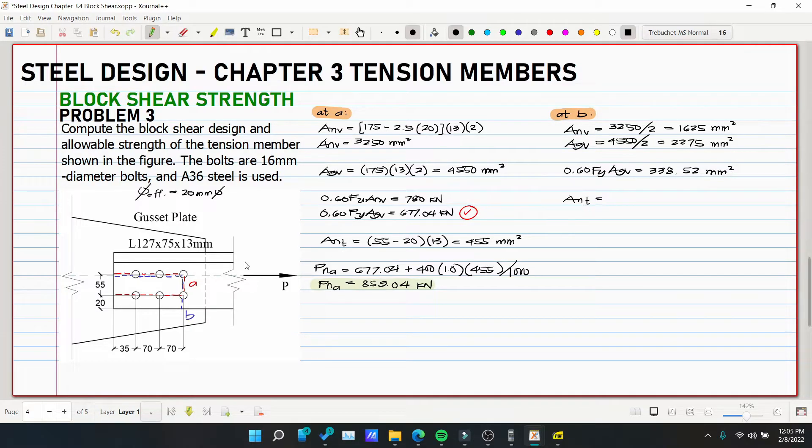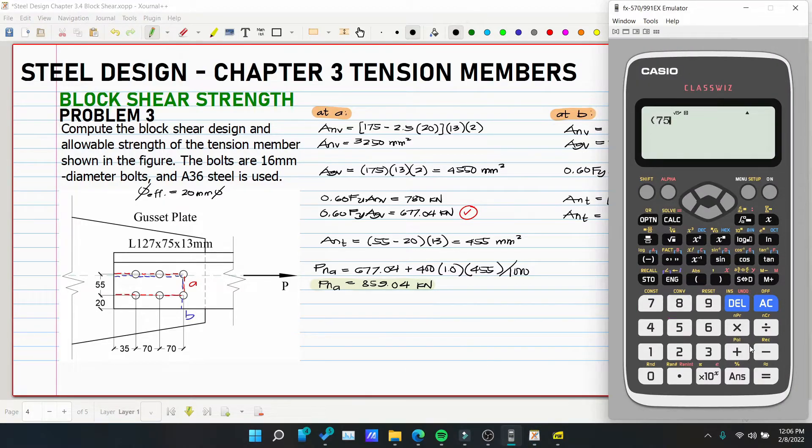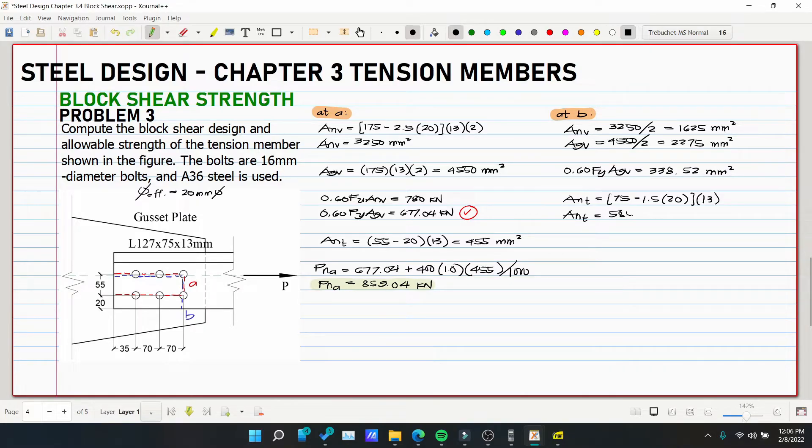Then let's solve ANT. So this is full, 55 plus 20. So 75 minus how many holes? So one and a half. So 1.5 of 20 multiplied by 13. So this is our ANT. So 75 minus 1.5 of 20 multiplied by 13. So 585 millimeter squared. So we can now solve our PN sub B, which is equivalent to 338.52 plus 400 multiplied by 1.0 multiplied by 585 over 1000.